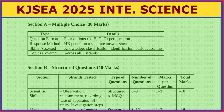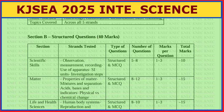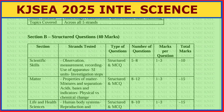Section B structured questions carry 40 marks. Scientific skills assessed include observation, measurement, recording, use of apparatus and units, and investigation steps — with five to eight questions, each carrying one to three marks, giving 10 marks. For matter, properties of matter, separation of mixtures, acids, bases, indicators, physical versus chemical change, we have eight to twelve questions each carrying one to three marks, totalling 15 marks.